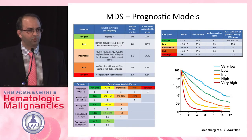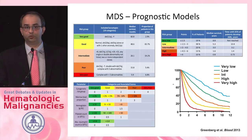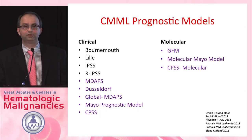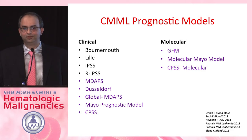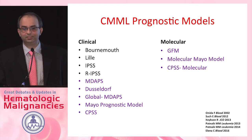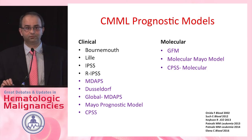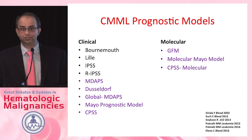In myelodysplastic syndrome there is a well-formulated prognostic scoring system — the international prognostic scoring system and its revised version. Unfortunately in chronic myelomonocytic leukemia, as a group we haven't reached consensus on the most effective way to stratify patients, resulting in numerous models. There are multiple clinical models and molecular models, and I'll briefly touch upon the strengths of these and where we stand in terms of disease prognostication.